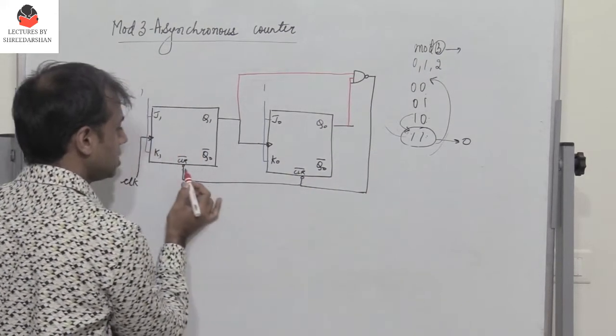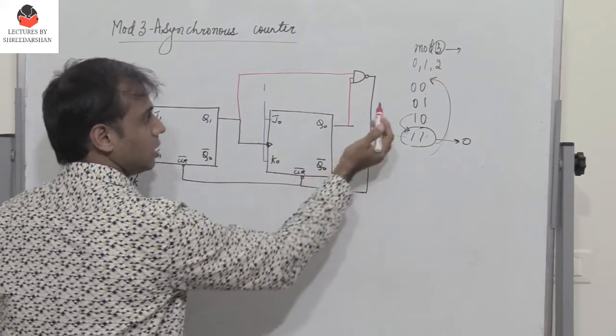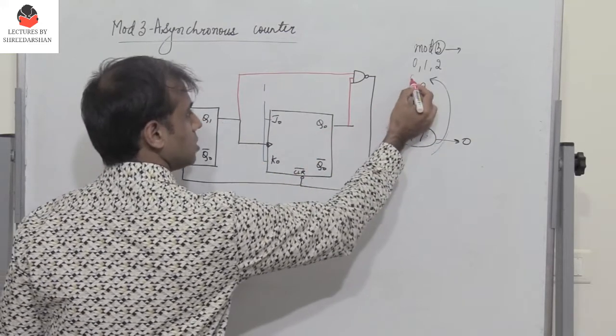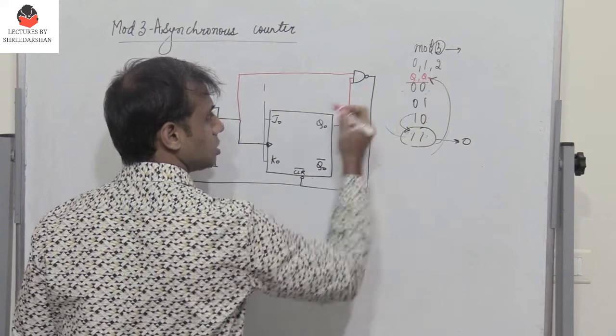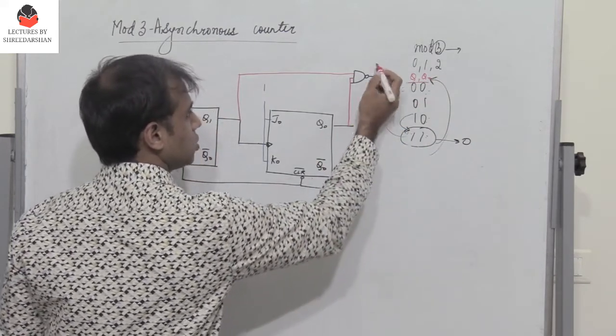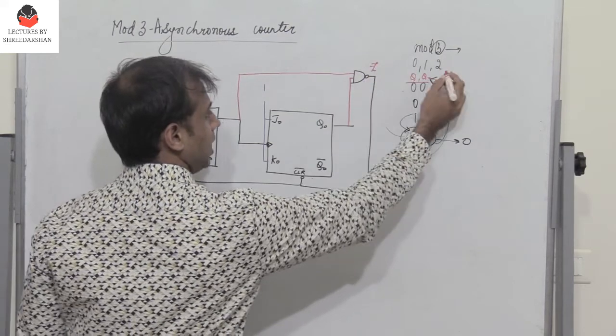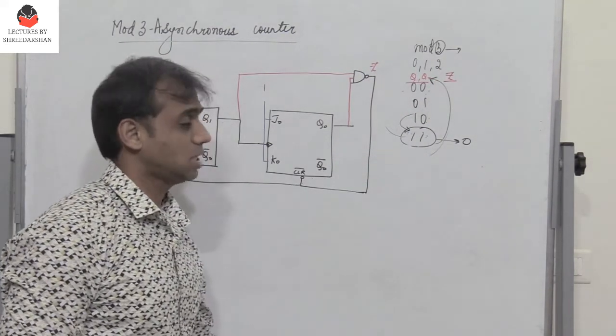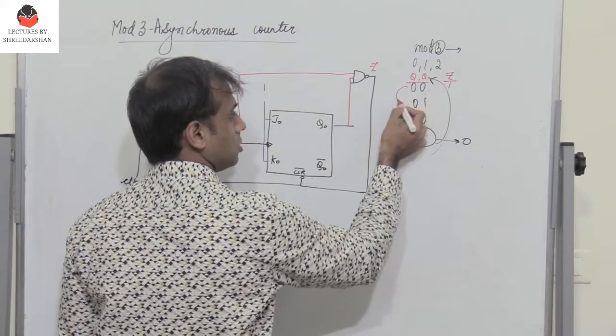If you have the state q1 and q0, this is q1 and this is q0. What's the output coming here? If the output is called z, for the first state 00, z is 1. The state changes from 00 to 01, and when you have 01, output z is again 1, so clear is disabled.